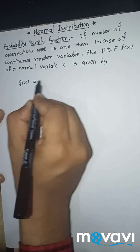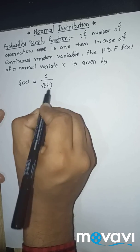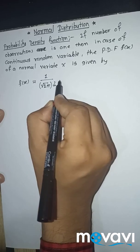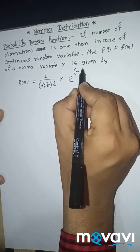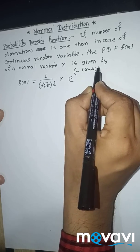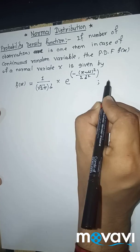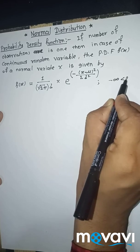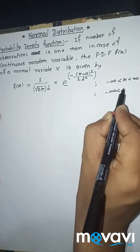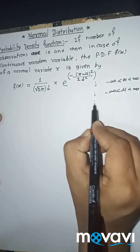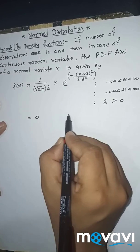f of x is equal to 1 upon root 2π into σ, into e raised to minus (x minus μ) bracket square upon 2σ squared. Here x lies between minus infinity and infinity, mean μ also lies between minus infinity to infinity, standard deviation σ is greater than 0, and f of x is equal to 0 otherwise.